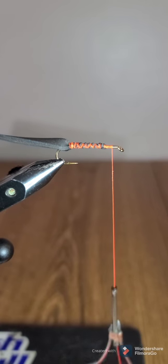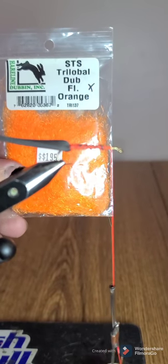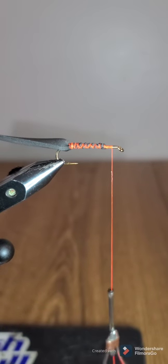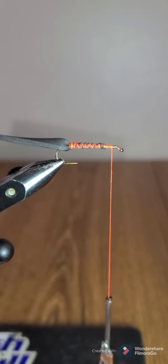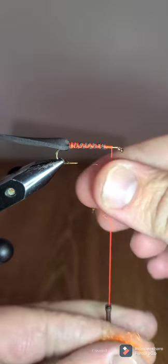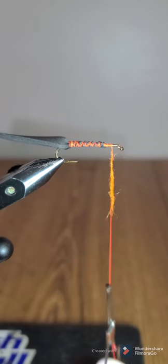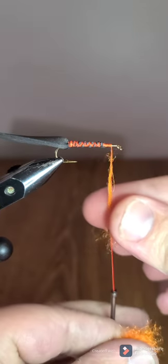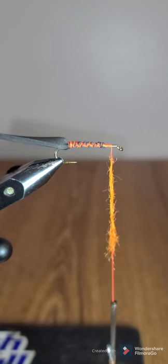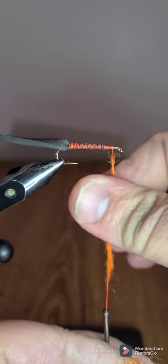Next, I'm going to use the STS Trilobal Dub in Fluorescent Orange. I did use the Hot Orange Ice Dub for a dozen of the flies already, and that worked pretty well. But I ran out, so now I'm going to use this stuff. This stuff works pretty well.